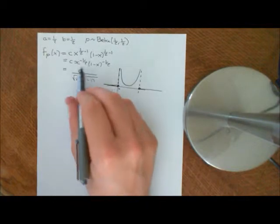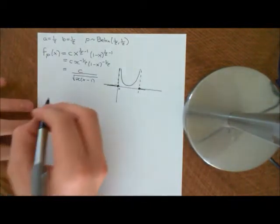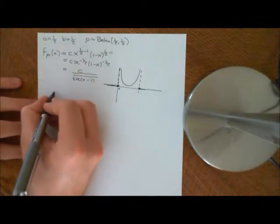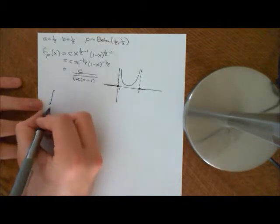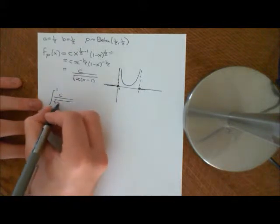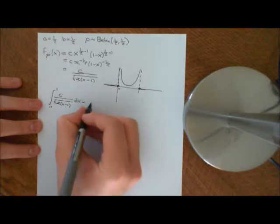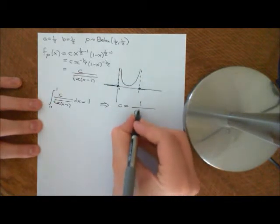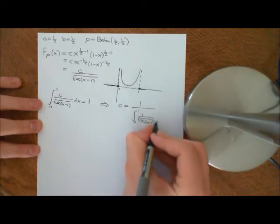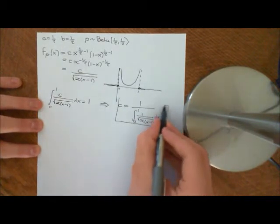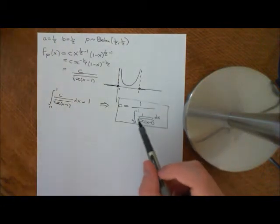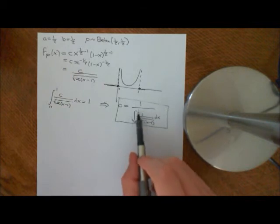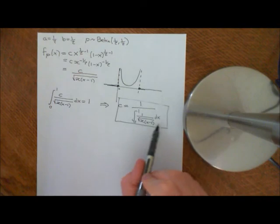You can attempt to perform this integral if you like — you will struggle a lot. So instead of actually calculating the normalising constant, we'll cheat: we'll say that c is whatever you need it to be. We use the formula that the integral between 0 and 1 of c over the square root of x(1 minus x) dx needs to equal 1. Therefore c equals 1 divided by the integral between 0 and 1 of 1 over the square root of x(1 minus x) dx. We'll leave it like that — that's what the normalising constant is. If you can work out that integral you can find c; if not, numerical methods or a calculator will get you something very close to the answer.